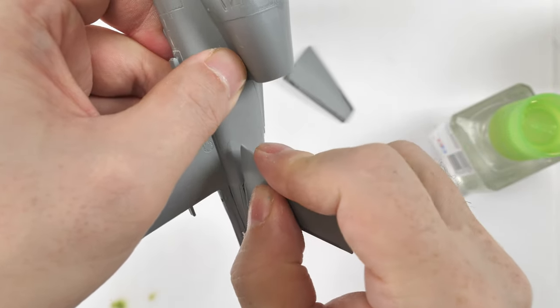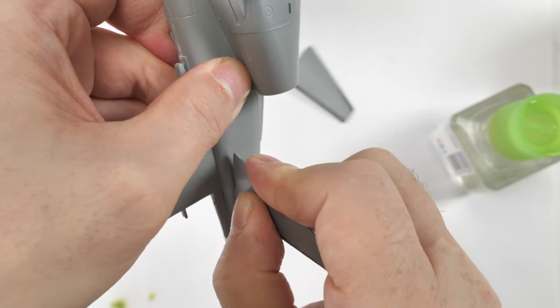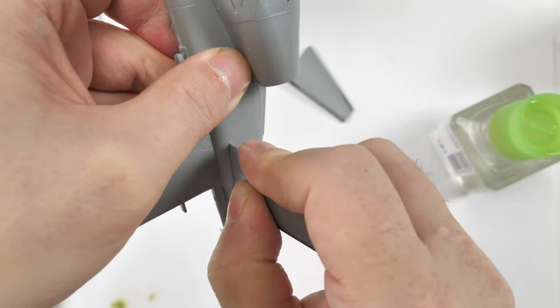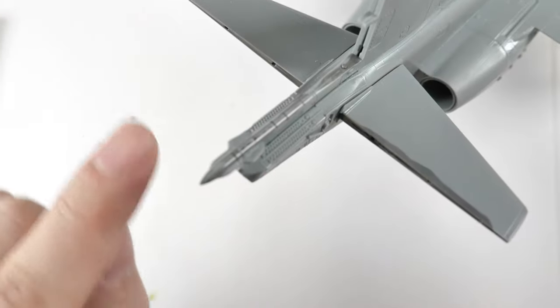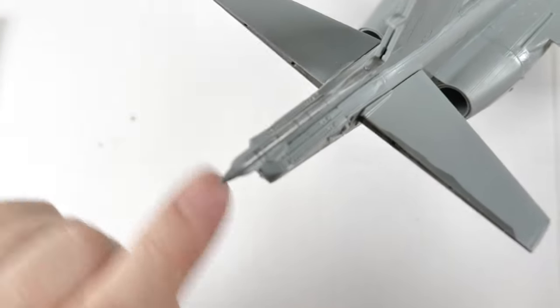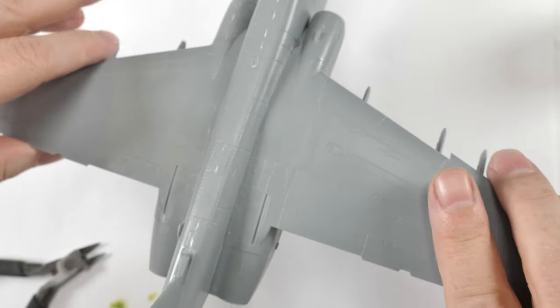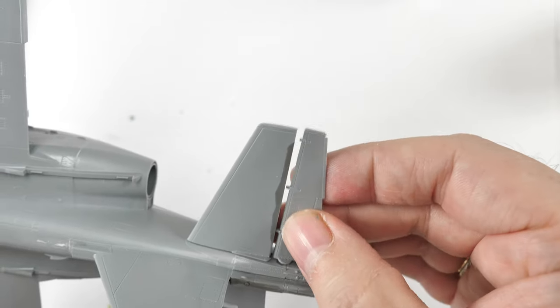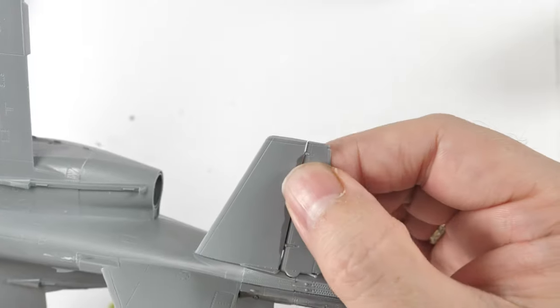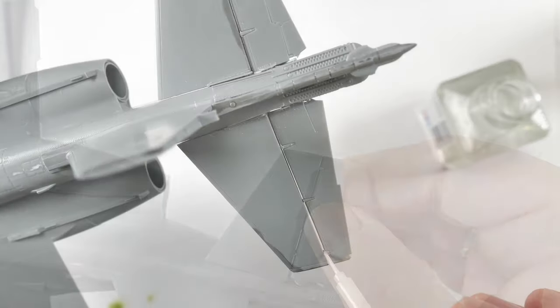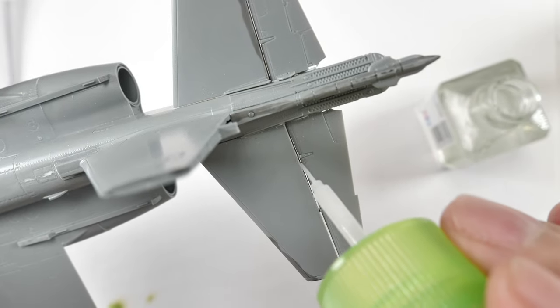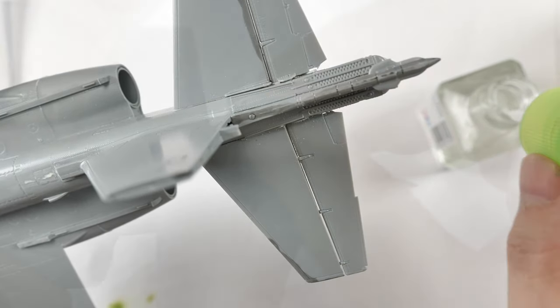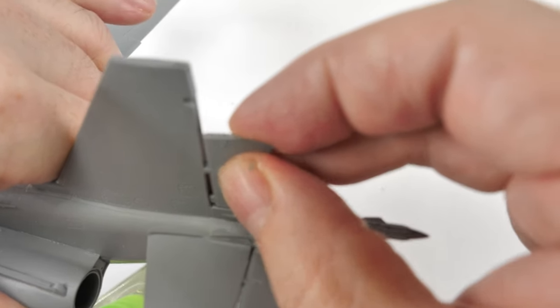Be careful with the empennage, rear tail plane. They are handed. They will form an upwards V if they're fitted correctly. Check the instructions carefully. There is a subtle difference between them. And there we are. Fitting on the elevators now. They snap into place basically and just need just a little tiny drop of glue just on those contact points there where the hinges are.